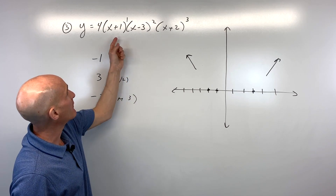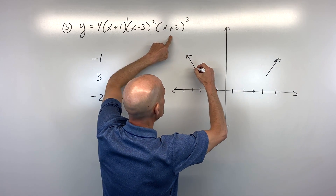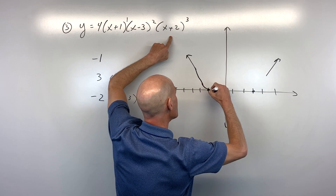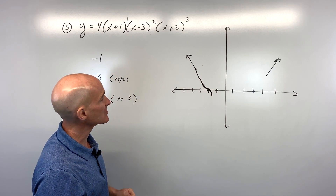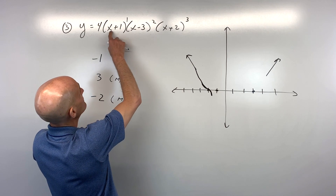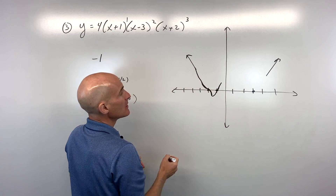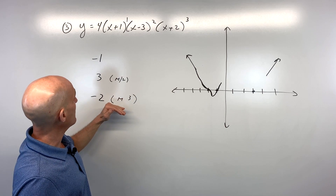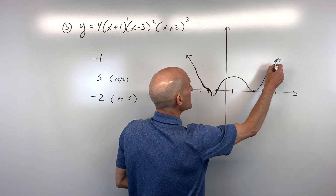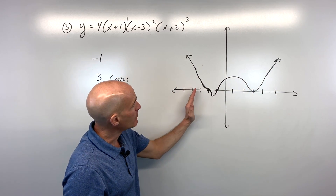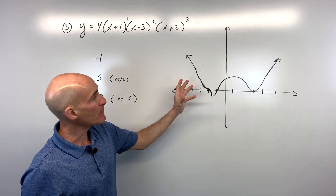Now for the shape at each zero: at x equals negative 2, multiplicity 3 means the graph has a cubic shape as it passes through. At x equals negative 1, multiplicity 1 means it goes straight through like a line. At x equals 3, multiplicity 2 means it has a parabola shape — bouncing off that point. This gives a solid sketch; adding points between zeros would refine it further.